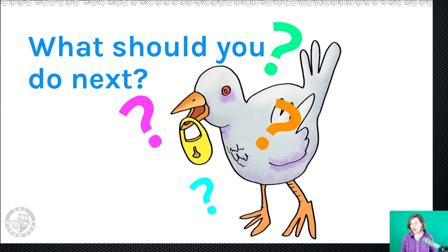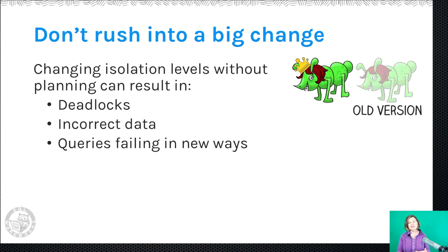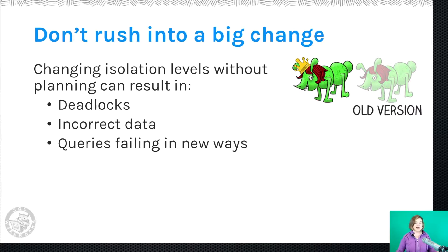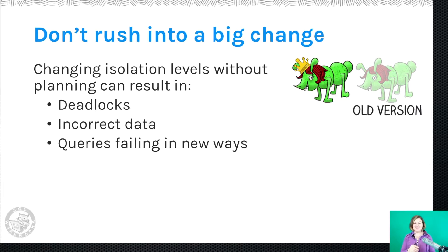What should you do next? I wish I could tell you to just turn on Read Committed Snapshot isolation, but it's not quite that simple. If you suddenly change your isolation level to Snapshot or Read Committed Snapshot, you could overwhelm tempdb with versioning if version cleanup isn't allowed to happen. You could also hit those race conditions with RCSI that cause incorrect results. You don't want to just pull the trigger right away — you want to learn about the isolation level and figure out whether Snapshot or Read Committed Snapshot is right for you, or whether you need to use classical isolation levels in some places.